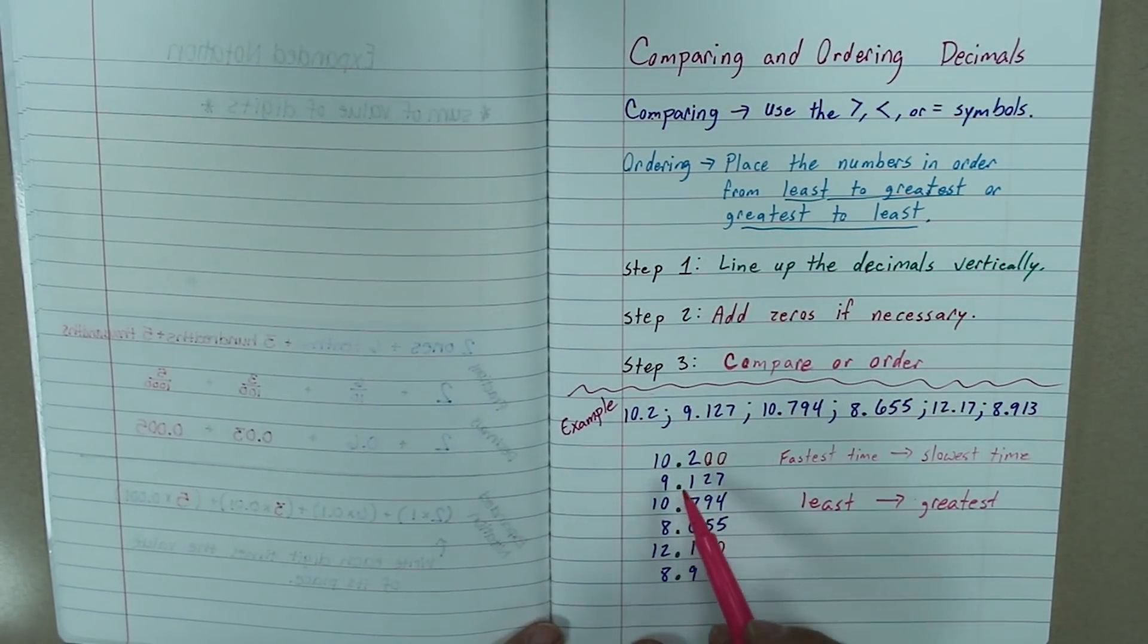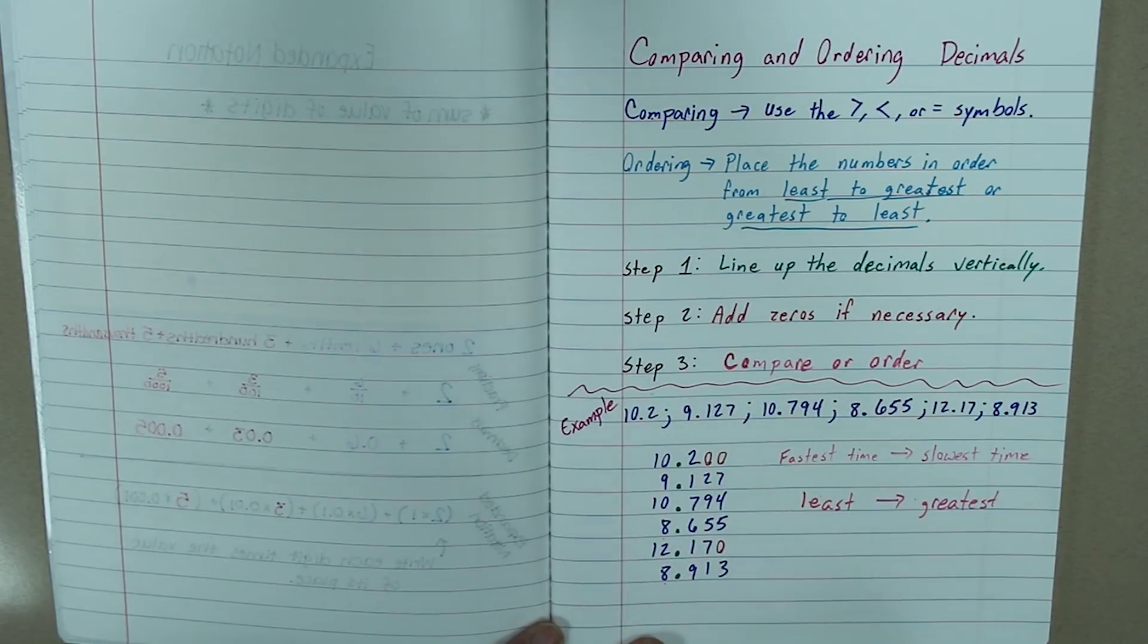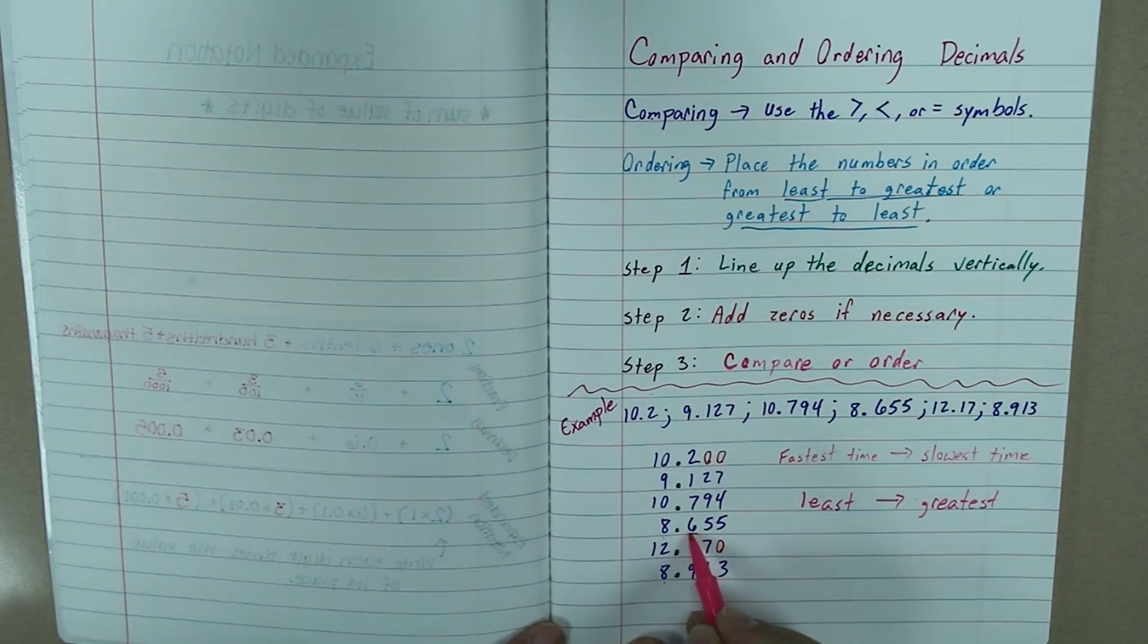So, now we know we are looking for the smallest time going to the greatest time. So, what is our smallest time? I am going to start with my smallest number here in the ones place. And I see that we have both have eight in the ones place. And those are both smaller. Well, I know that six is less than nine.